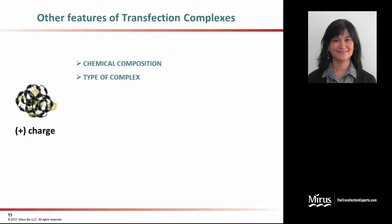Now that we have seen how important the chemical composition and the type of complexes can be in deciding how efficient or toxic the transfection reagent is, there are also other features of transfection complexes that need to be considered for efficient transfection. One such parameter is the size of transfection complexes, which can range from anywhere between 40 to 1,000 nanometers. With our reagents, we have typically seen this fall in the range of 300 to 500 nanometers. Keep in mind that either very small or very large transfection complexes are not very efficient at cellular uptake.